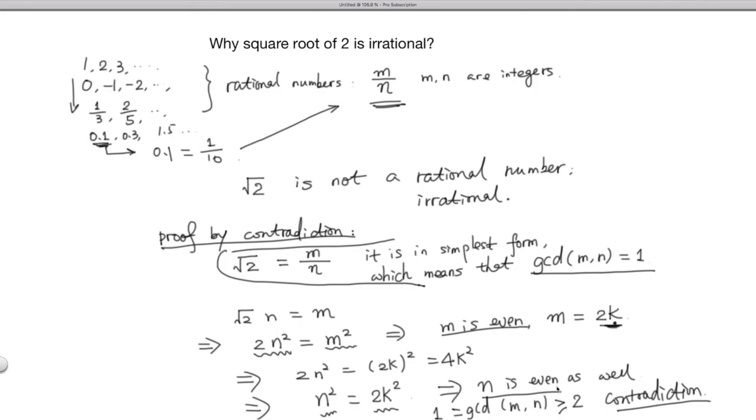And where the contradiction comes from is because of the assumption that square root 2 is a rational number, so that assumption cannot be right. So square root 2 is irrational. And this technique is called proof by contradiction. It's going to be super important.